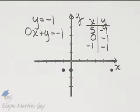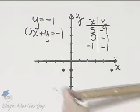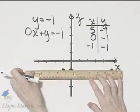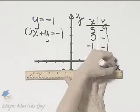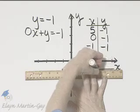Can you see a line is formed, and it happens to be a line parallel to the x axis. It is a horizontal line, and here is the graph of y is equal to negative 1.